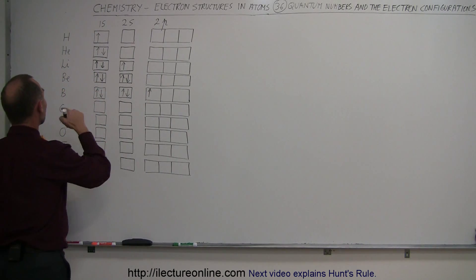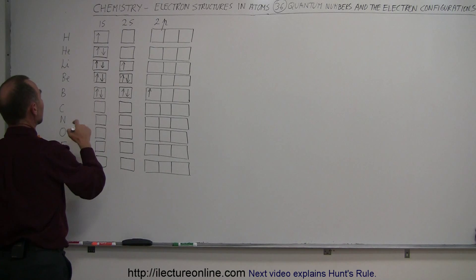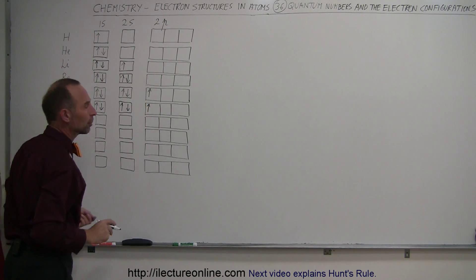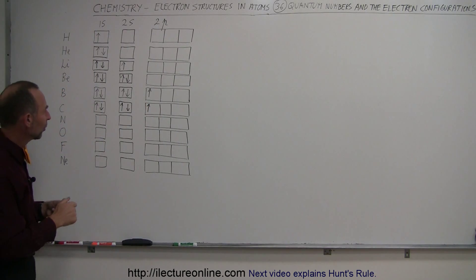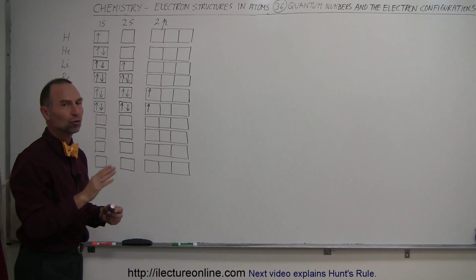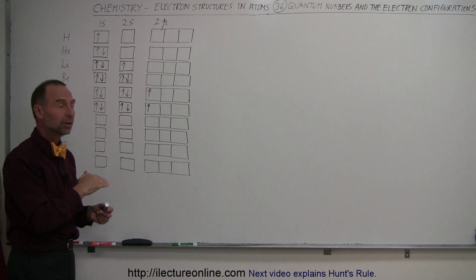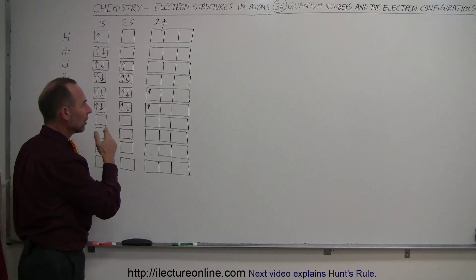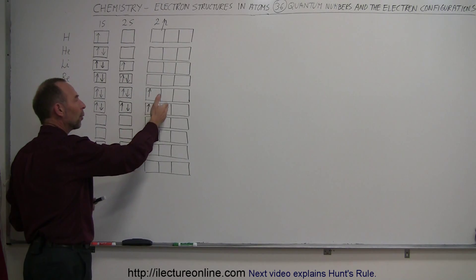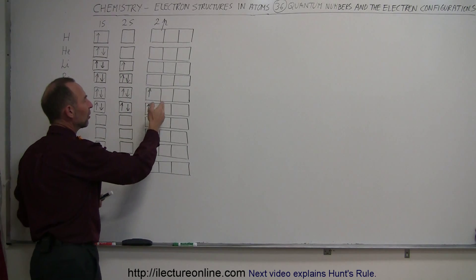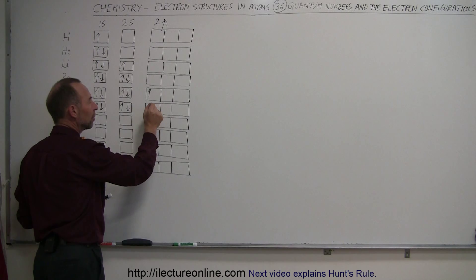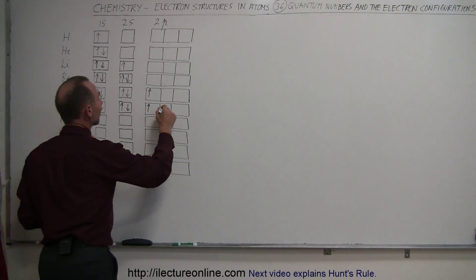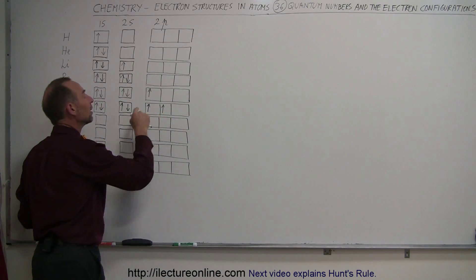The key comes in when we place the sixth electron for carbon. The first two S orbitals are filled, and there's already one electron in a P orbital — but where does the next one go? Will it go into the same orbital? The answer is no. Electrons would rather not share an orbital if they can help it, so since there are two open ones it'll take one of those. In addition, will the sixth electron be spin up or spin down? It turns out that if electrons are placed into separate orbitals, they prefer to be in the same spin direction, so the sixth electron will also be spin up.